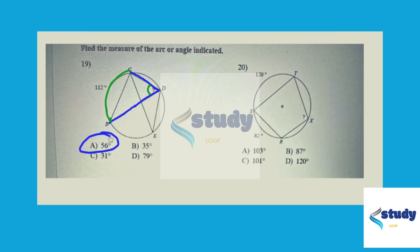In the second case, we have another inscribed angle, angle RXT. Now it opens up to arc RST, which in total would be the 120 and 82 together, which is 202 degrees.